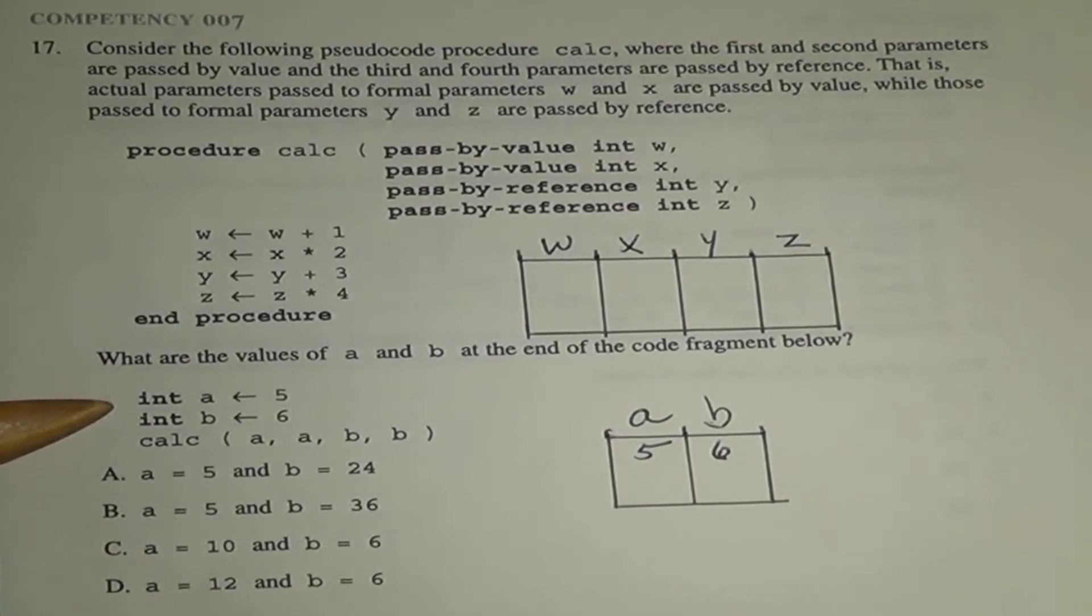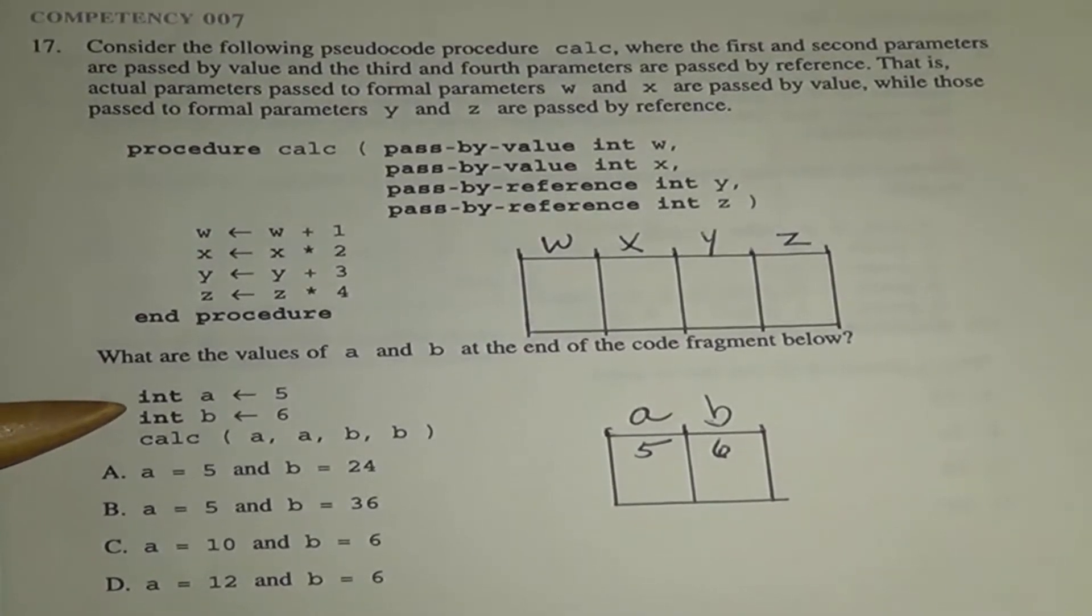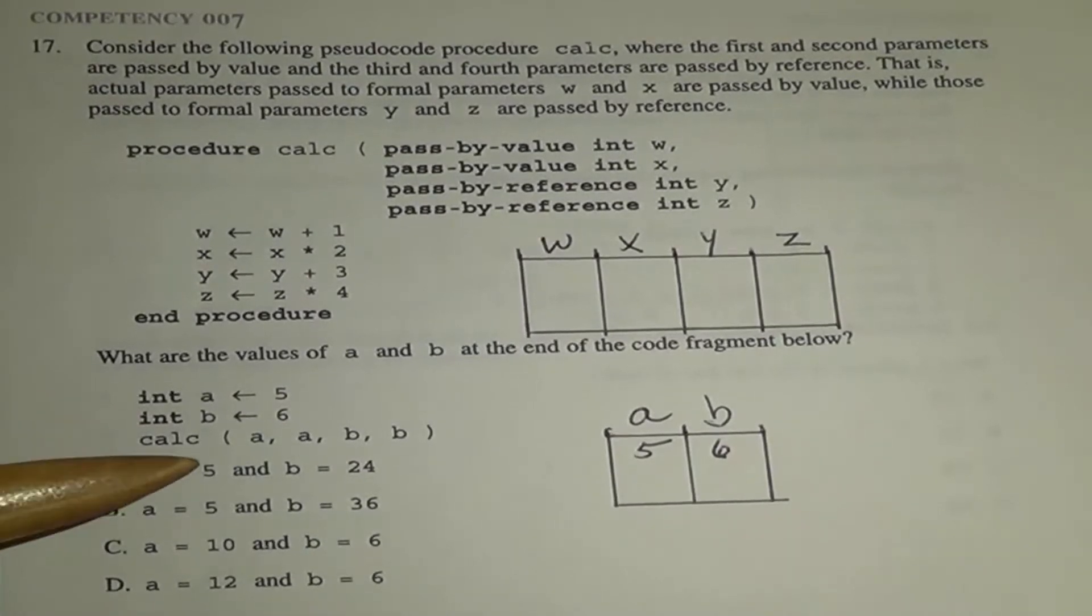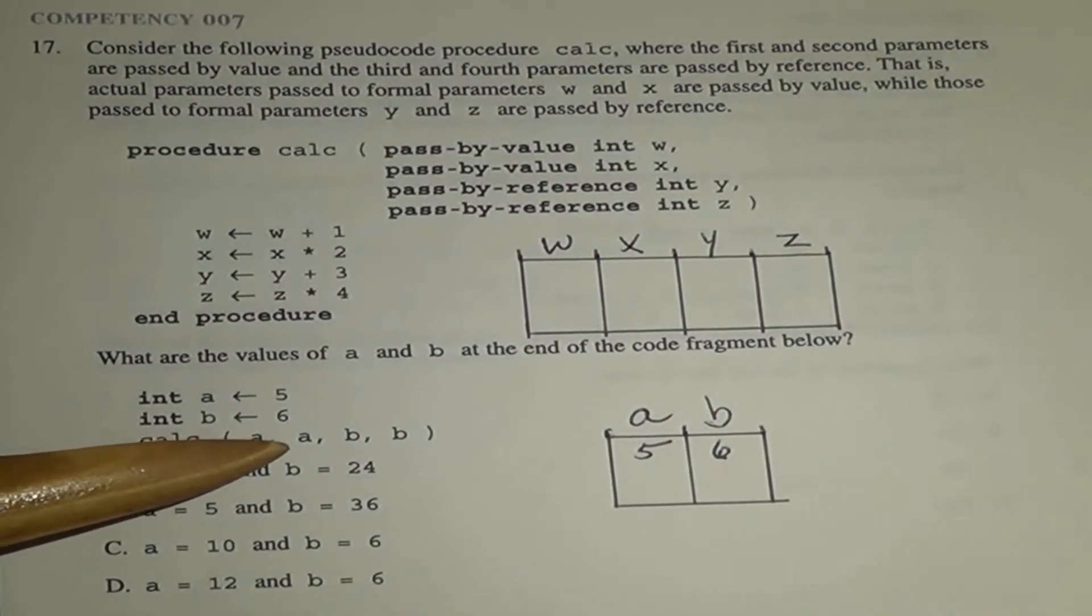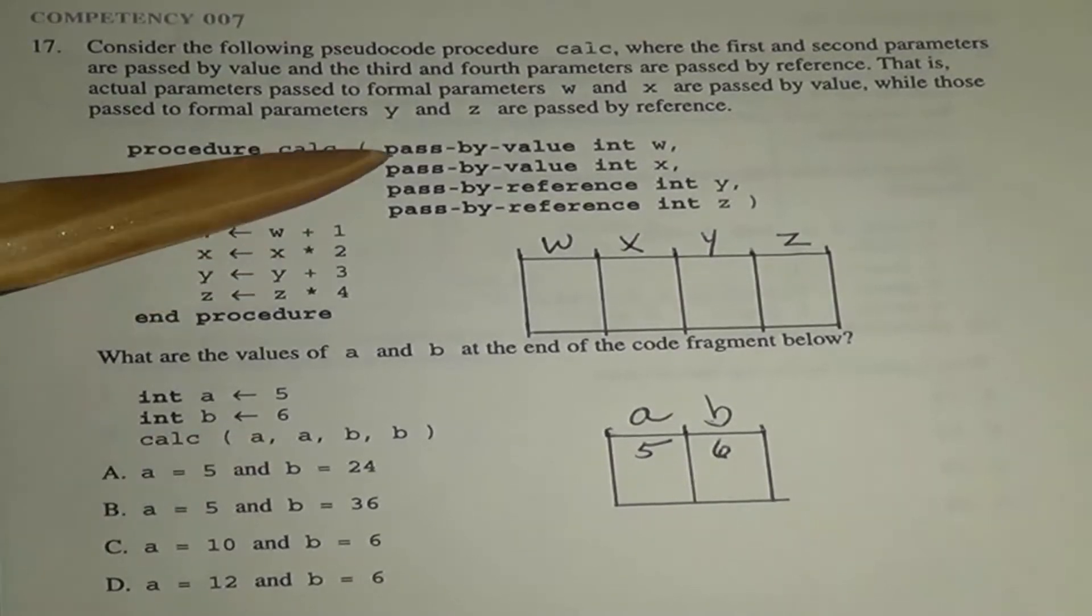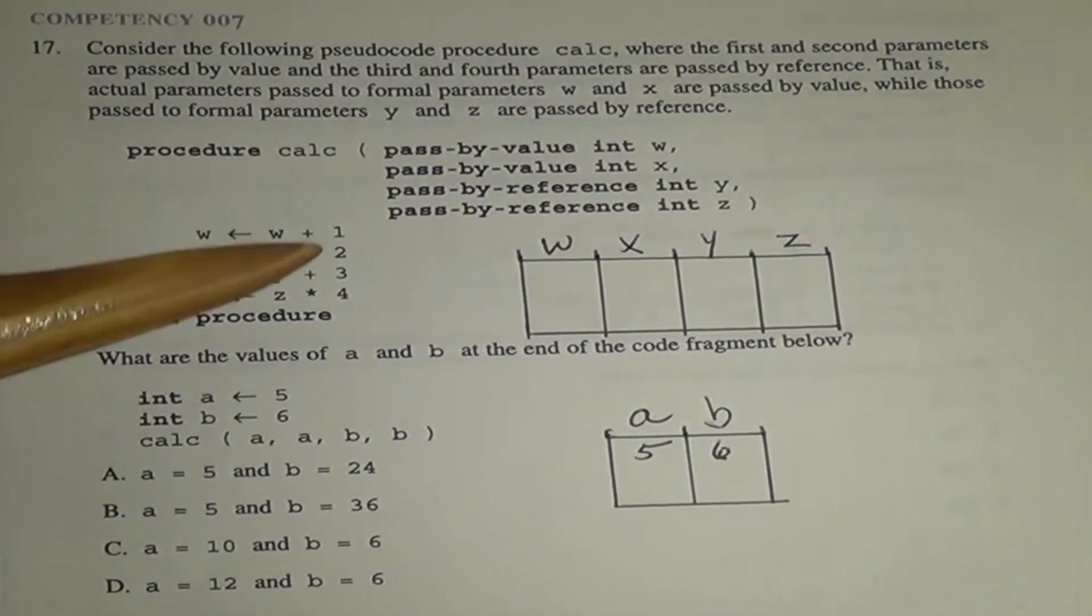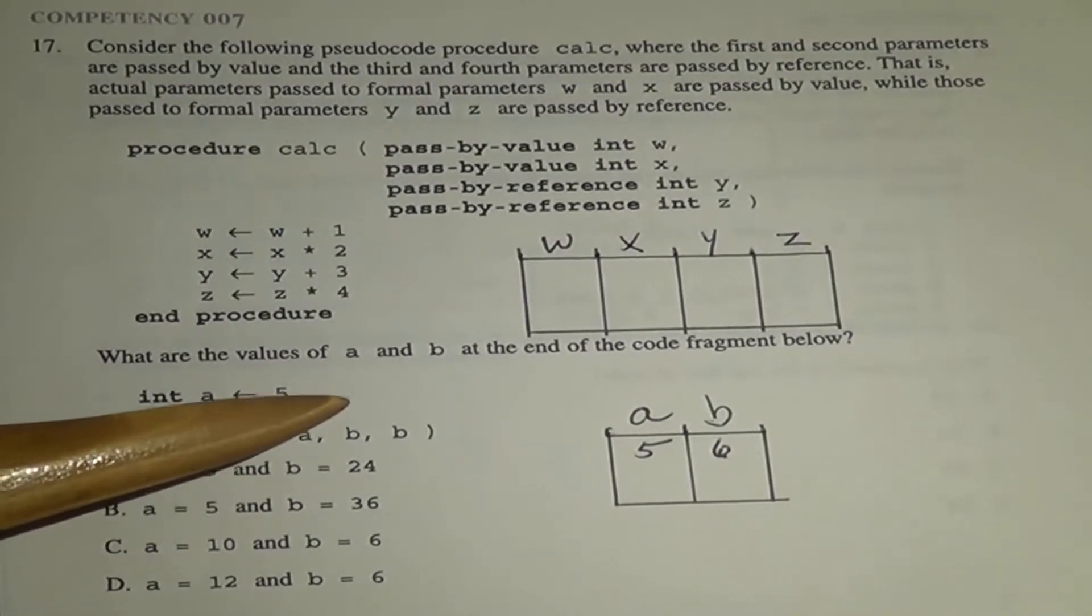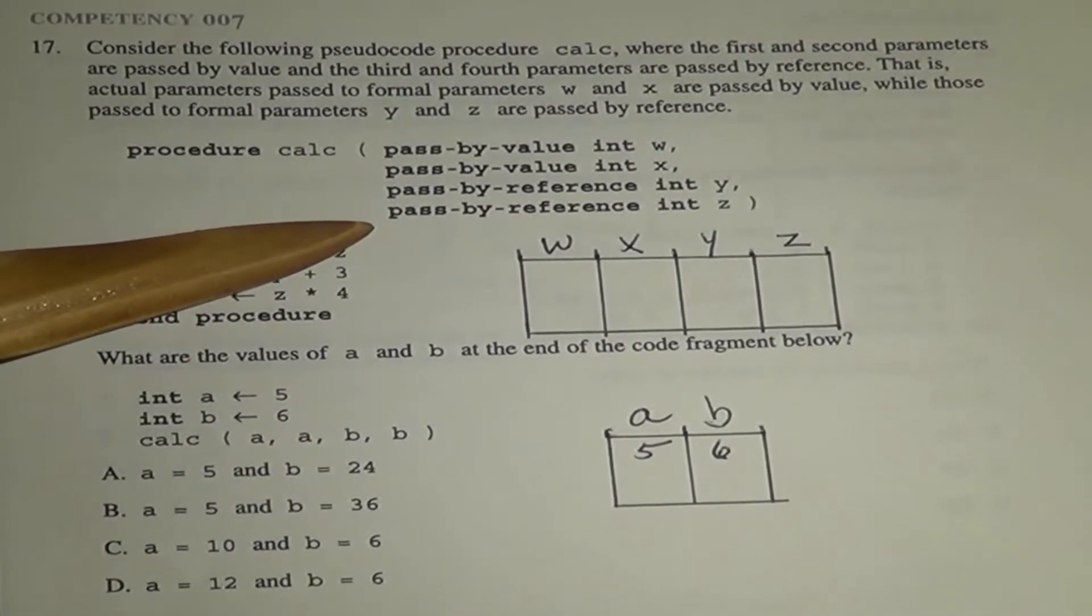When we go down to here, we want to know what are the values of A and B after this code segment. A starts out as 5, B starts out as 6. And we can see that A is sending its value 5 twice, once to W and once to X. And B is sending its value 6 also twice, once to Y and once to Z.